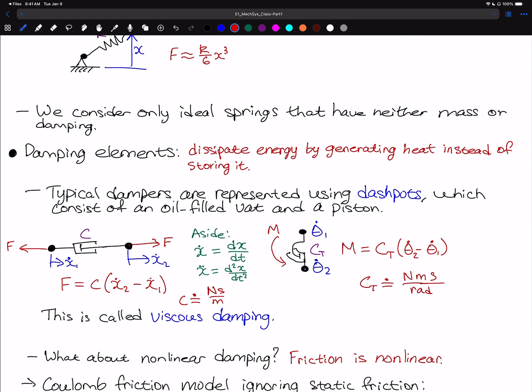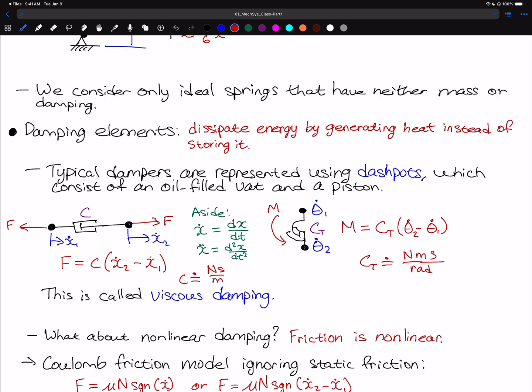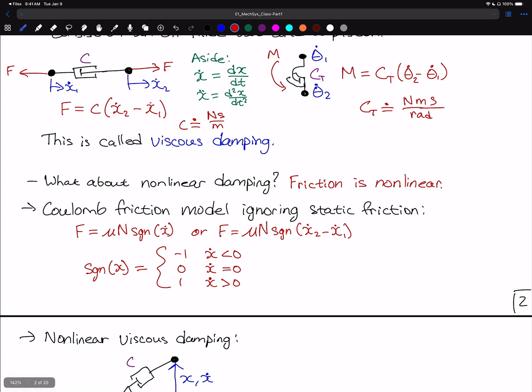We then talked about damping elements and discussed how they dissipate energy by generating heat instead of storing it. We looked at what a dashpot is for both translation and rotation motion, and then we talked about Coulomb friction.